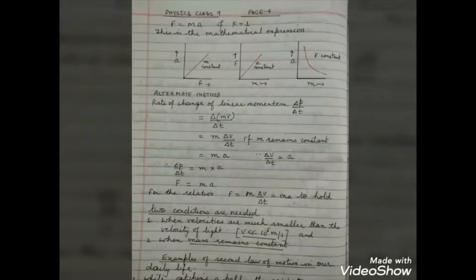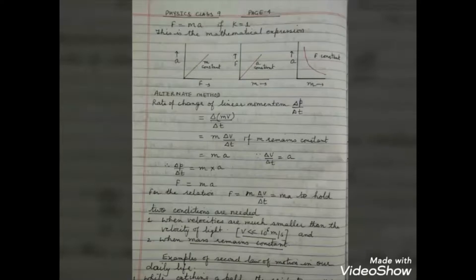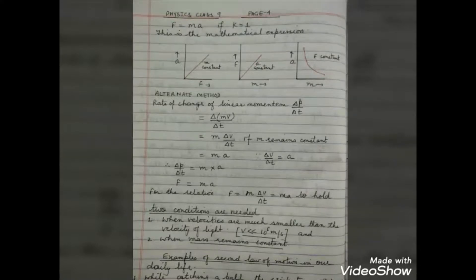If asked to plot a graph of acceleration versus force for constant mass, the graph will be a straight line passing through the origin. A graph of force versus mass for constant acceleration is also a straight line through the origin. However, a graph of acceleration versus mass for constant force will be a curve, as indicated in the diagram.